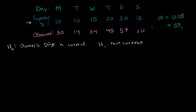If I don't get that — if the probability of getting a chi-square statistic that is this extreme or more is greater than my alpha, my significance level — then I'm not going to reject it. I'll say I have no reason to assume he's lying. So let's do that.